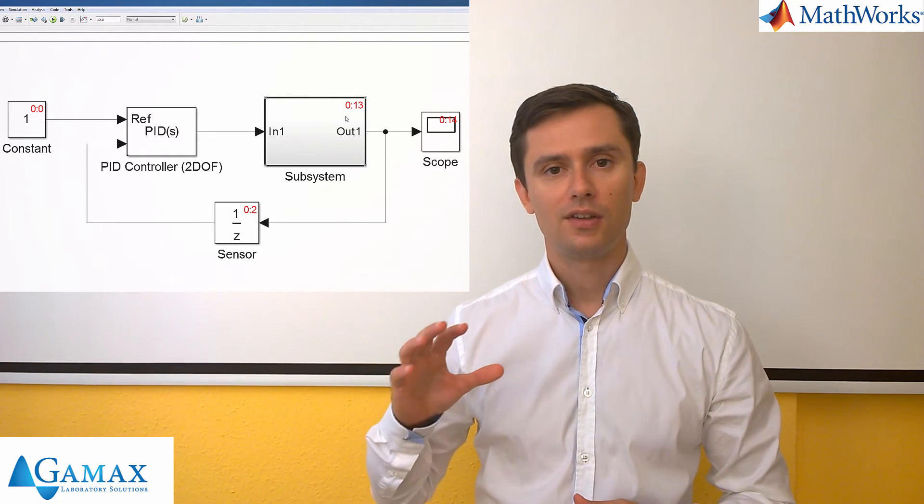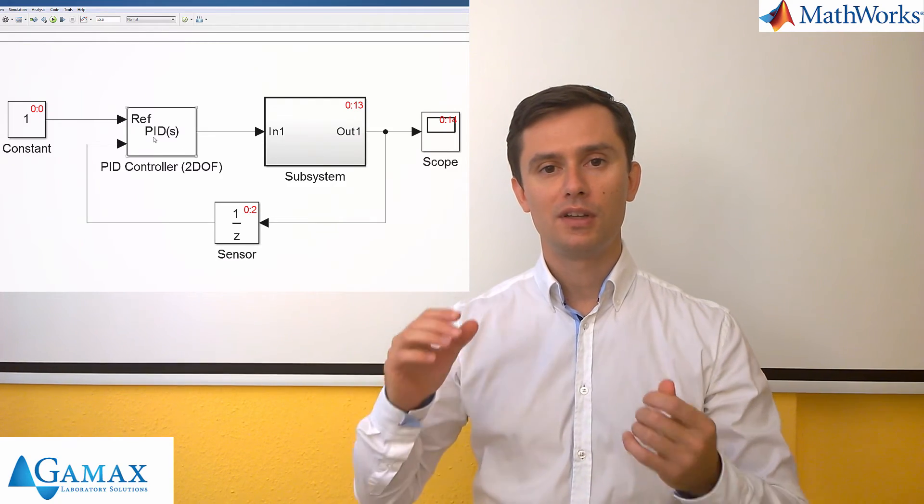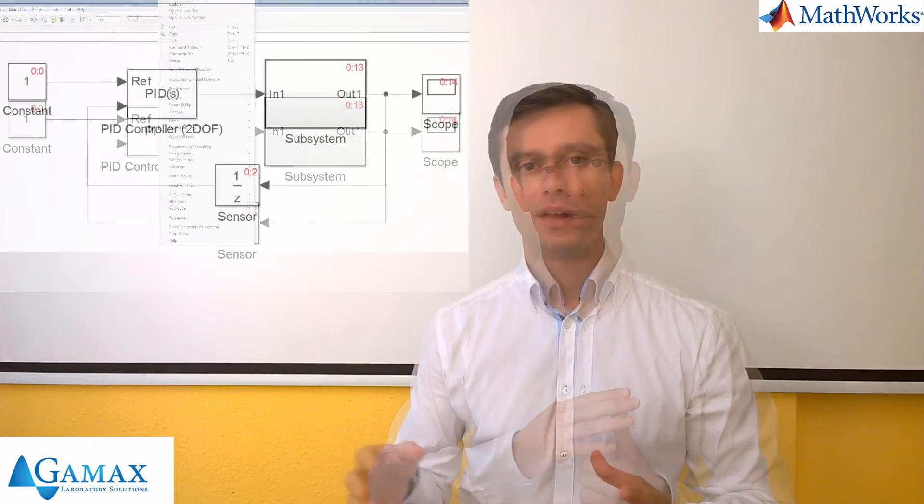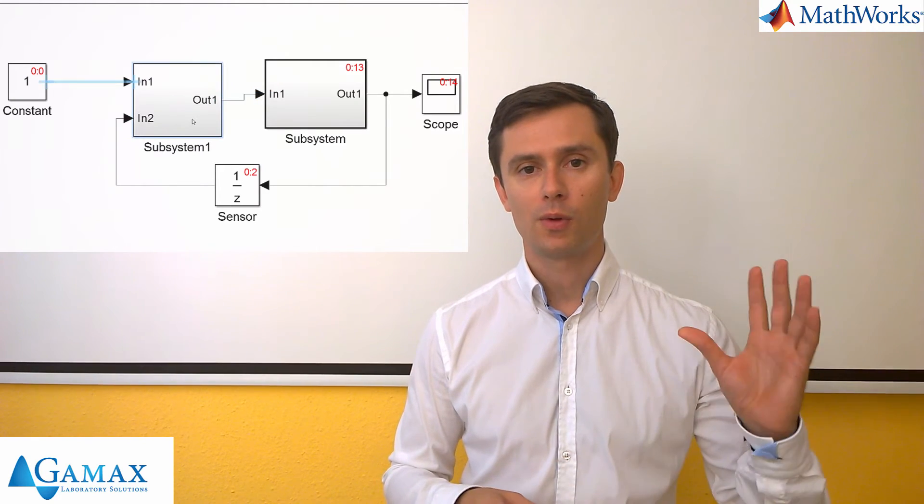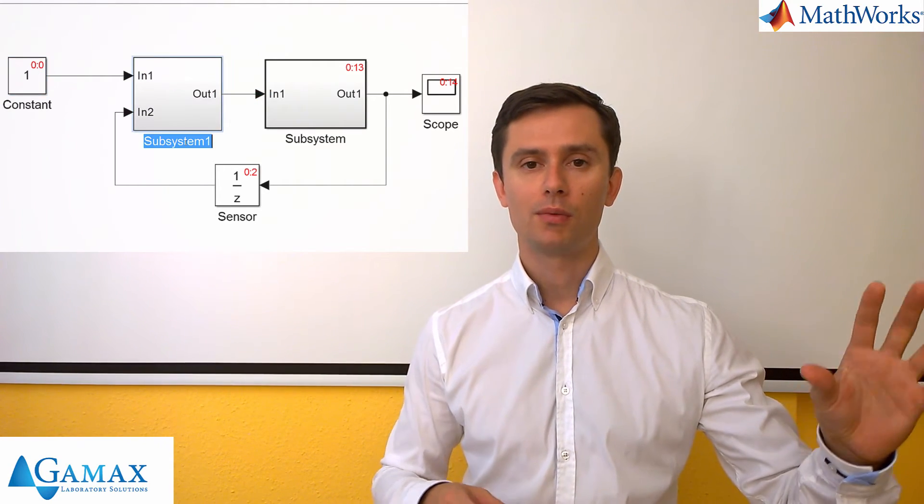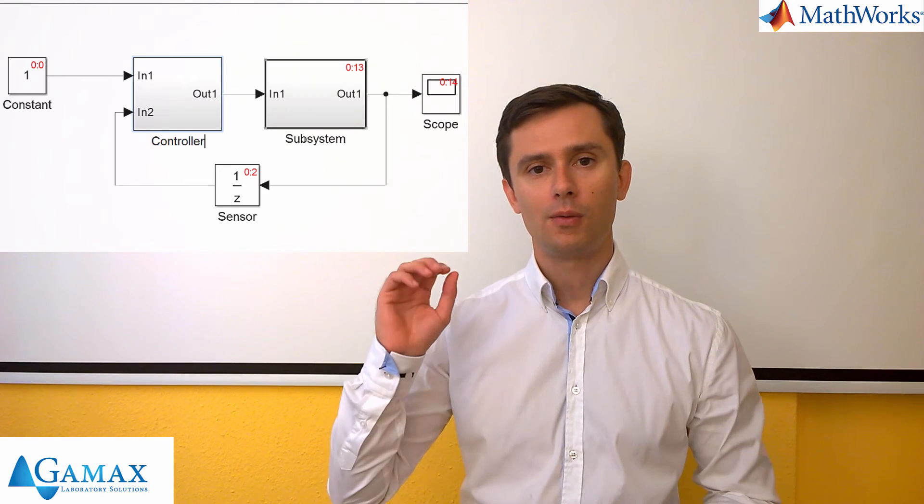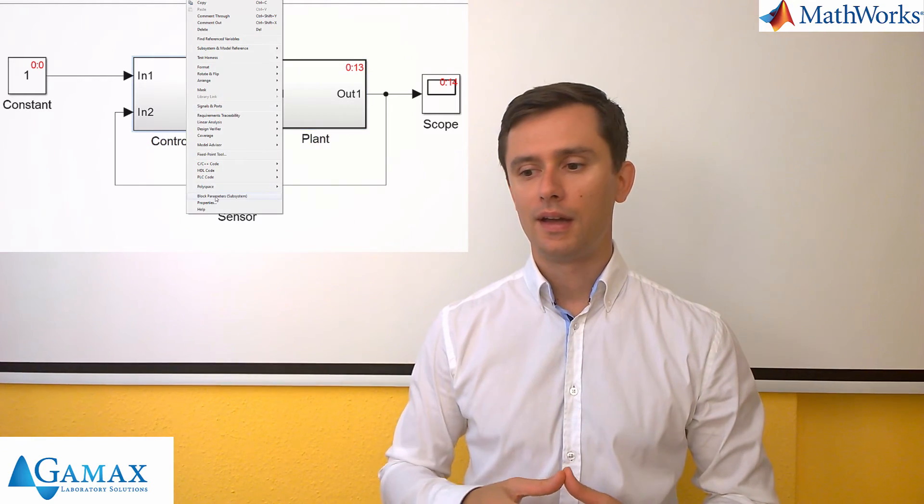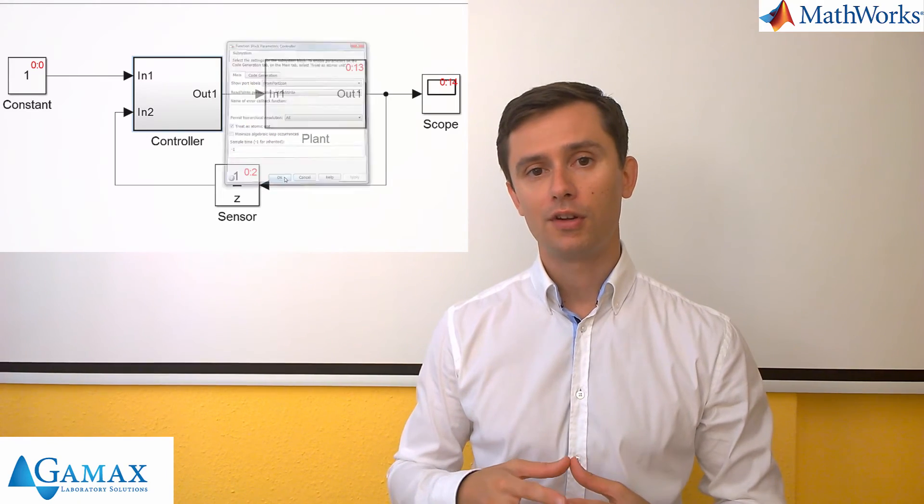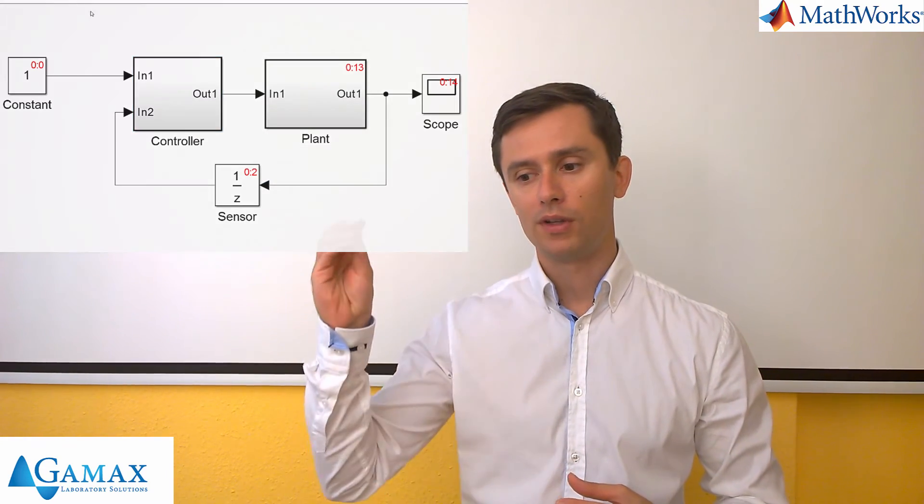So now we can see that the subsystem is treated as a separate block. Now let's create an atomic subsystem for the controller as well. So we will have an atomic subsystem for the controller and we will have an atomic subsystem for the plant model. And if we rerun the simulation, then we will see that we have only these three numbers.